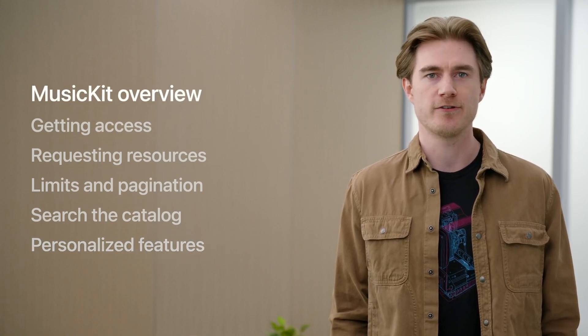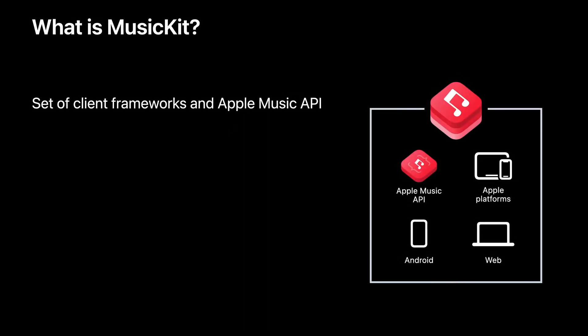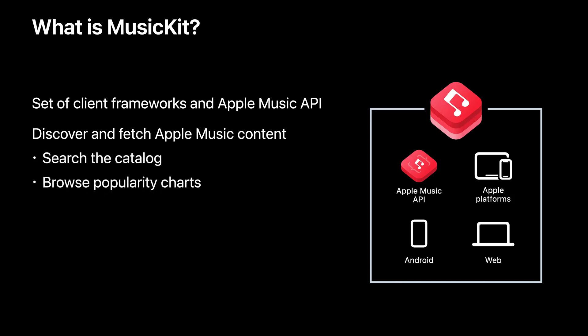I'll start with a brief introduction to MusicKit and Apple Music API. MusicKit was first announced at WWDC in 2017. Since then, we have made improvements that make integrating with Apple Music easier and continue to add support for additional functionality. MusicKit is a combination of client frameworks and the Apple Music API. Used together, they make it possible to add Apple Music functionality to your apps. You can discover and fetch content from Apple Music, including artists, albums, playlists, and more, with functionality to search the catalog and browse popularity charts.